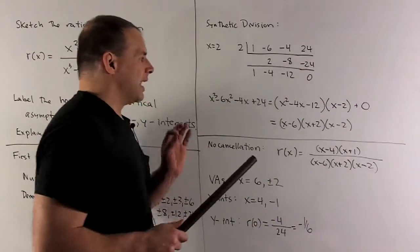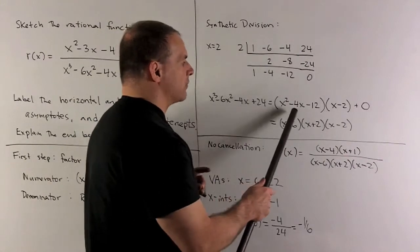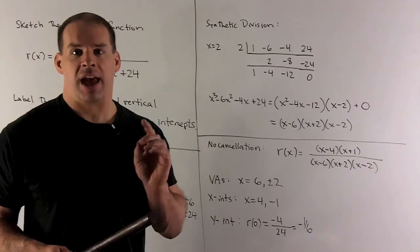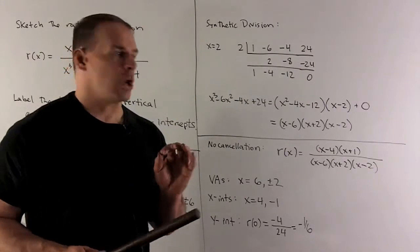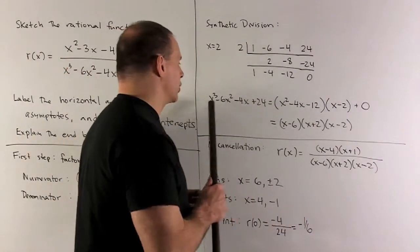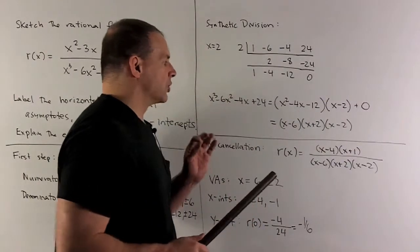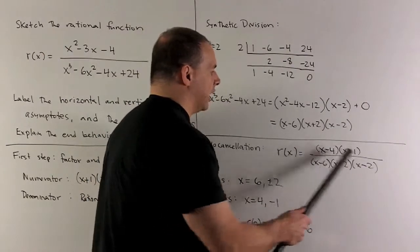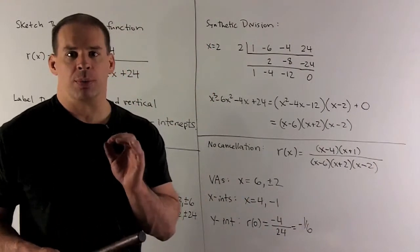If we take a look at x squared minus 4x minus 12, by inspection I see that factors into (x - 6)(x + 2). So we have a complete factorization of this cubic. We'll also note, if we just rewrite function r(x), there's going to be no cancellation. So I can start answering some questions.